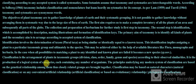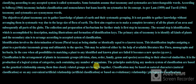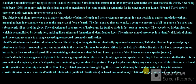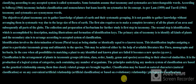Classification is the arrangement of plants in taxonomic groups: division, class, order, family, genus, and species. According to their observed similarities, it is the production of a logical system of categories, each containing any number of organisms. The principles underlying any modern system of classification are based on the genetical relationship among them; thus, closely related groups are brought together. Classification may be based on natural characters — natural classification — or on any convenient artificial relationship, or based on evolutionary relationship, following phylogenetic classification.